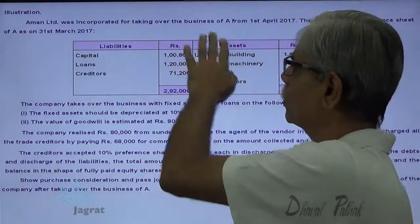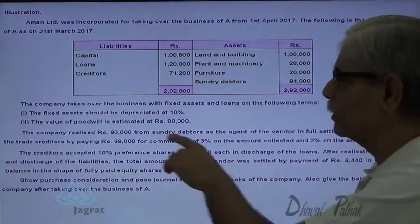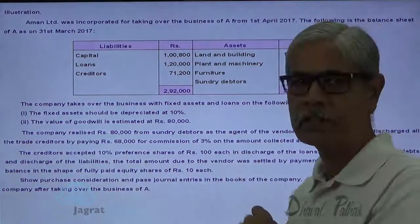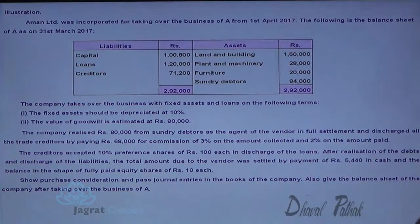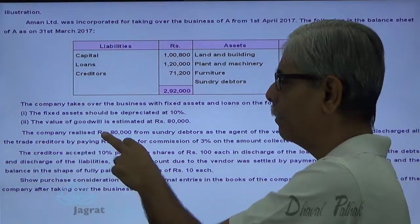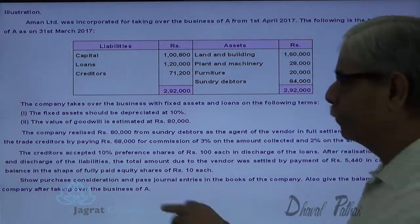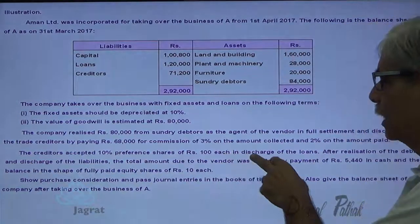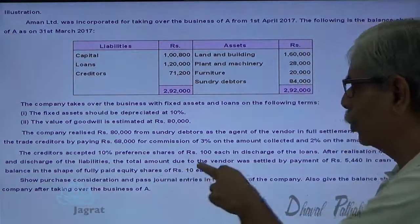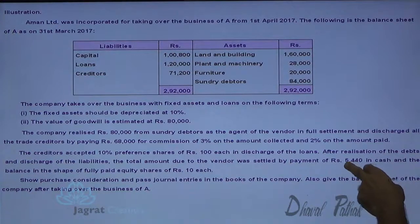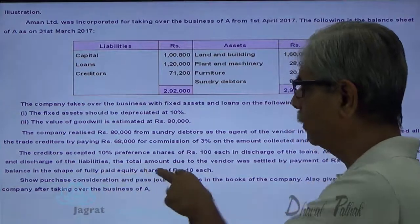The following is the balance sheet as on 31st of March 2017. The company takes over the business with fixed assets and loan on the following terms: fixed assets should be depreciated at 10%, value of goodwill estimated at 80,000. The company realized 80,000 from the sundry debtors as agent of vendor in full settlement, and discharged all creditors by paying 68,000, with a commission of 3% on amount collected and 2% of the amount paid. Creditors accepted 10% preference shares of Rs. 100 each in discharge of the loan.